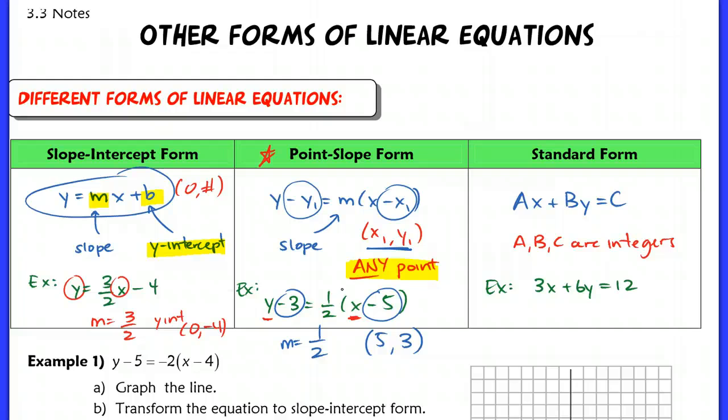The last one is standard form. Standard form is written as ax plus by equaling c, where a, b, and c are all integers. So what that looks like is you see that you have x and y on the exact same side, a constant on the other side, and then notice that all of the coefficients here, including that constant, are integers.